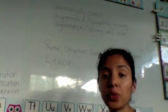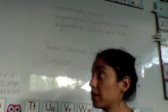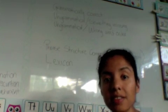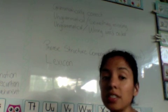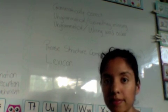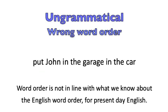On a second example, there are some sentences that are ungrammatical because something is missing. John puts the car. This sentence requires an official or an obligatory adverbial like where, which would be where they put the car, so something is missing. On example number three, some sentences are ungrammatical. The word order is not in line of what we know about the English word order for present-day English.